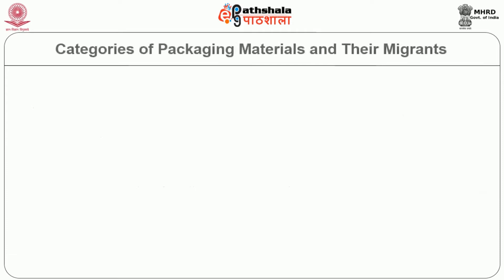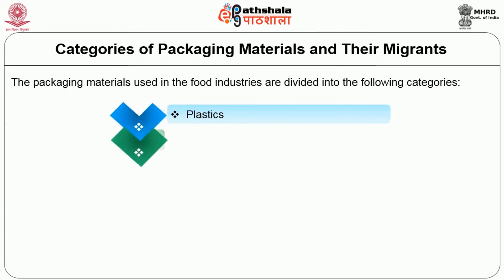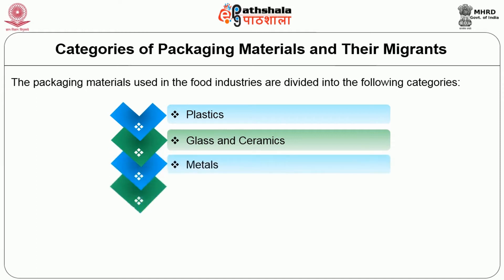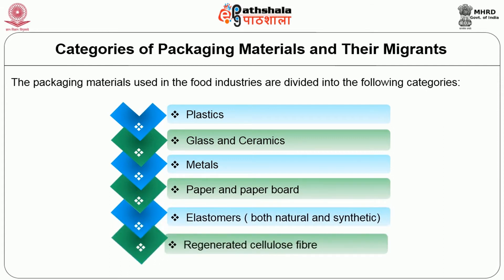Let us move to the different categories of packaging materials and their migrants. The packaging materials used in the food industries are divided into the following categories: plastics, glass and ceramics, metals, paper and paperboard, elastomers both natural and synthetic, and regenerated cellulose fiber.